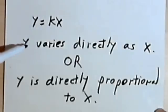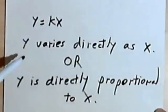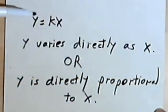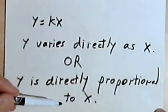Now when you have something like this, it's going to be read as y varies directly as x. So in other words, if you see a sentence that says y varies directly as x, you're going to write this formula, y equals kx. Another way they may say it is y is directly proportional to x.